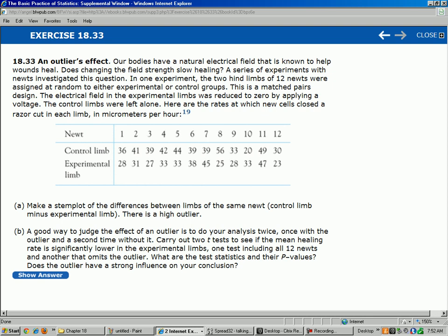Let's do a quick scan, first of all. The smaller the number, the slower it healed, because it says here's the rates. So the higher the number, the faster it's healing in micrometers per hour. So first newt, the control limb is healing faster than the experimental limb. Second newt, the control limb is healing faster. Third, healing faster, healing faster. So it looks like, well here, newt number six, they're about the same. Newt number seven, the experimental limb is healing faster.